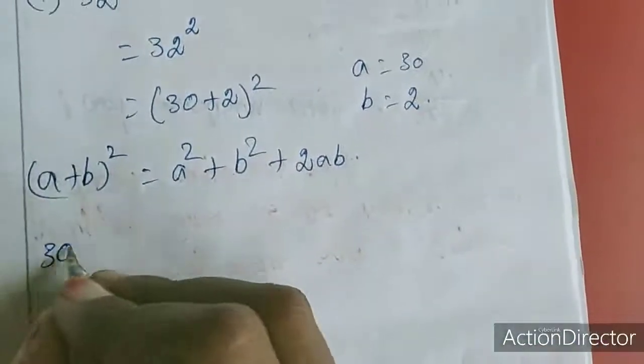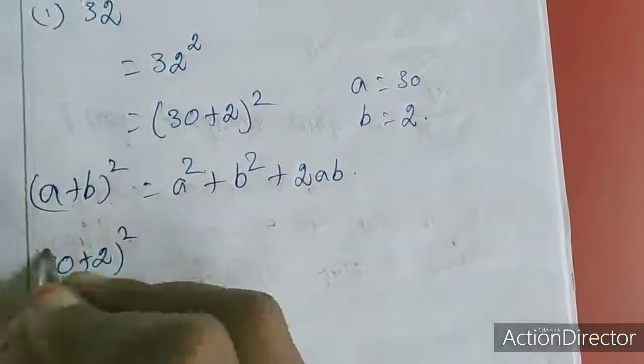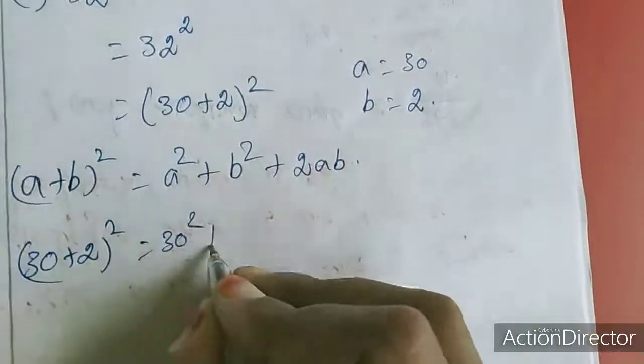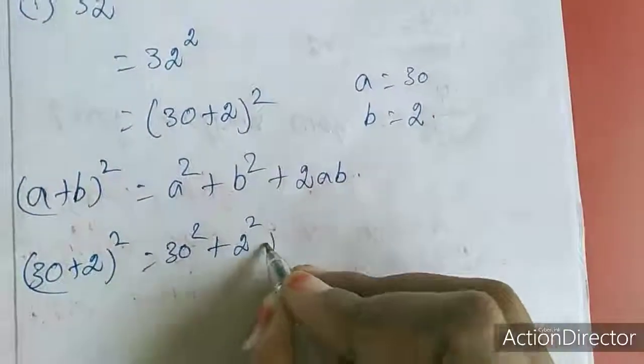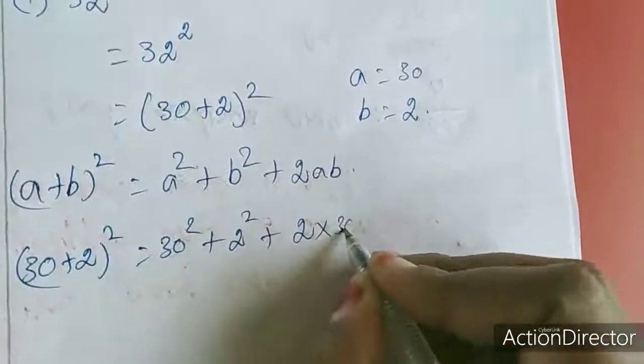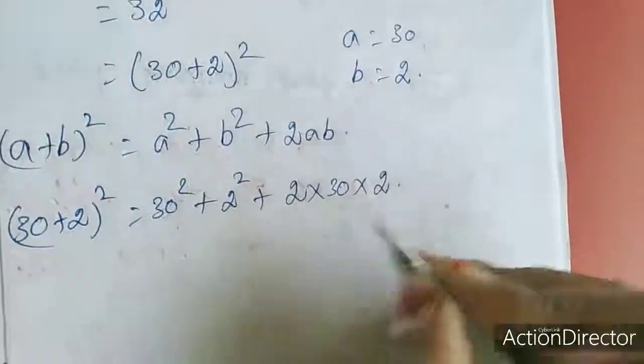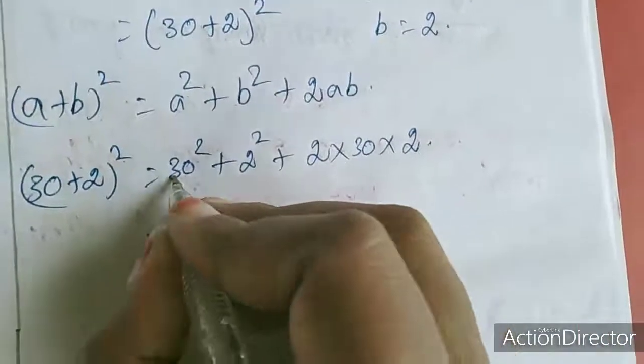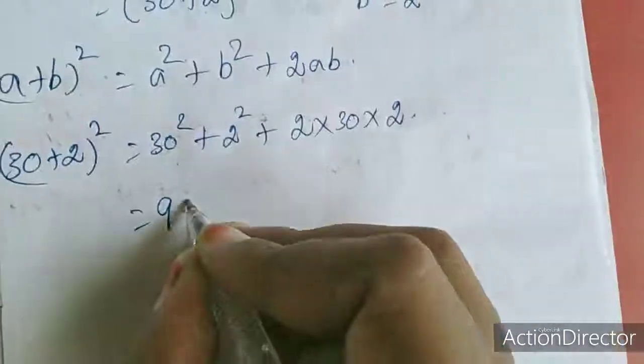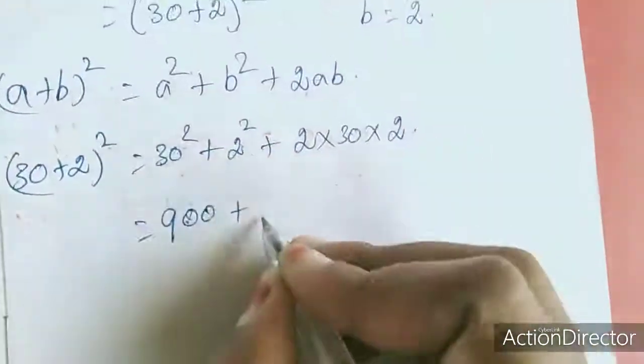So 30 plus 2 the whole square equal to a square, 30 square plus 2 square plus 2 into 30 into 2. So 30 square means 3 square 9, 0 square double 0, plus 2 square 4.